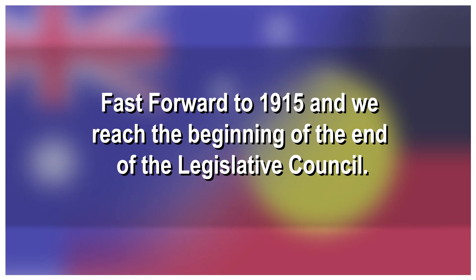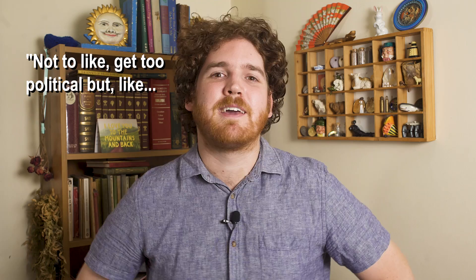Fast forward to 1915 and we reach the beginning of the end of the Legislative Council. Labor came to power under the leadership of TJ Ryan, who was not a big fan of the Legislative Council at all. Labor believed that it was undemocratic — probably because it was — and it should be abolished. The Council believed that Labor was bad and shouldn't be in government, and aggressively rejected or heavily amended around 800 bills between 1915 and 1919.